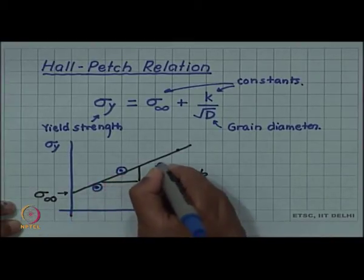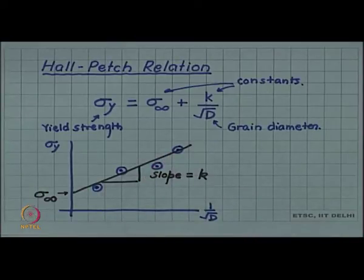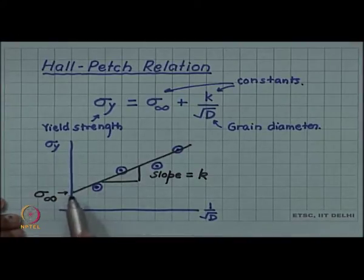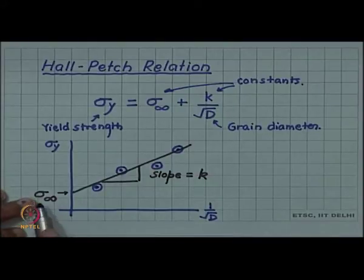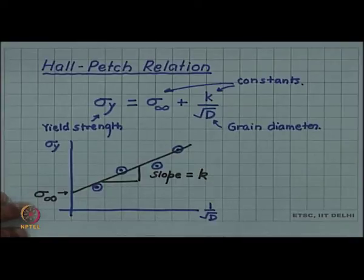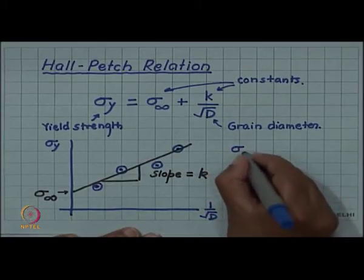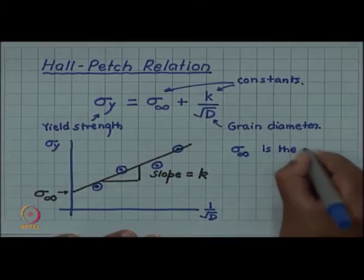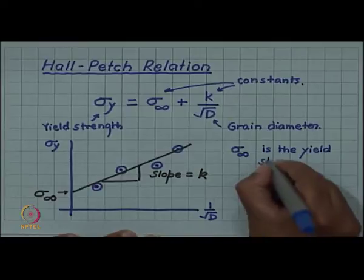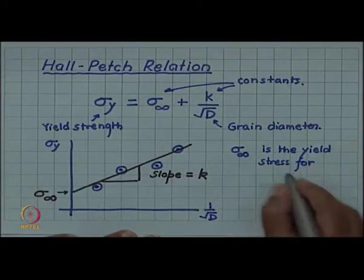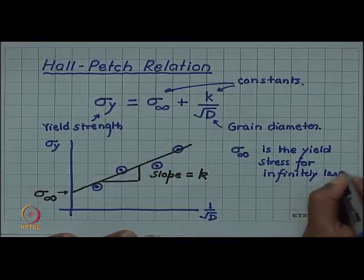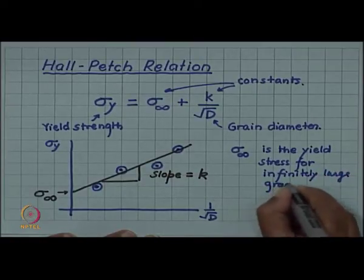These are your data points. You can give a physical interpretation of sigma infinity. You can see that sigma infinity is yield stress at 1 by root d equals 0, which means sigma infinity is the yield stress when d is infinity. So sigma infinity can be understood as the yield stress for a single crystal.